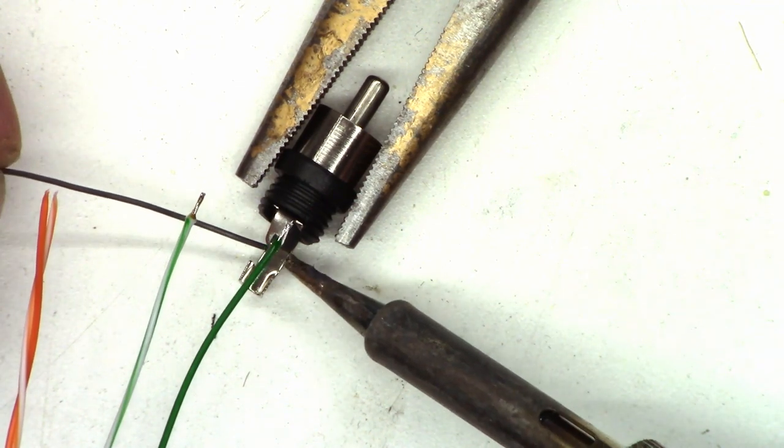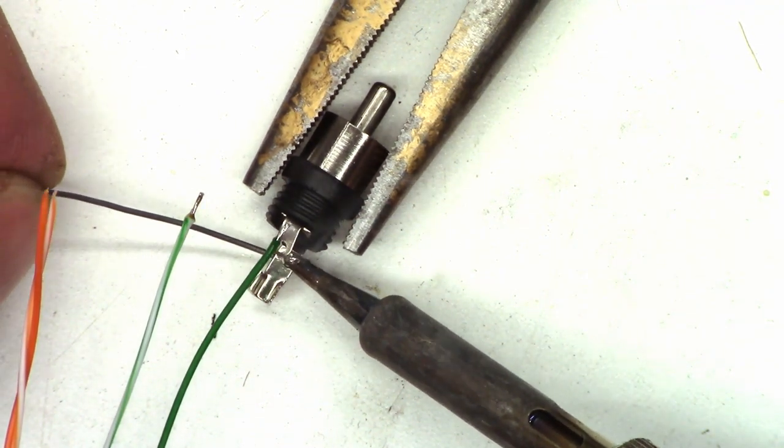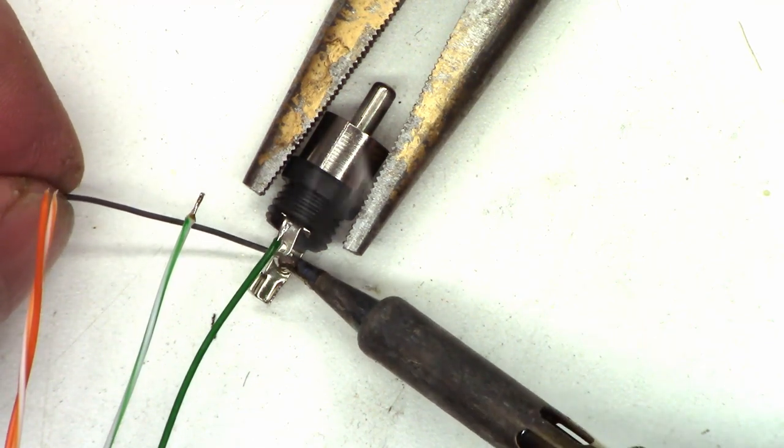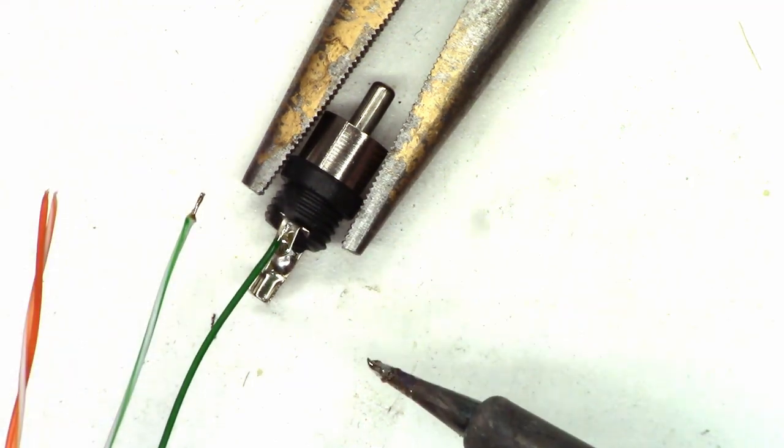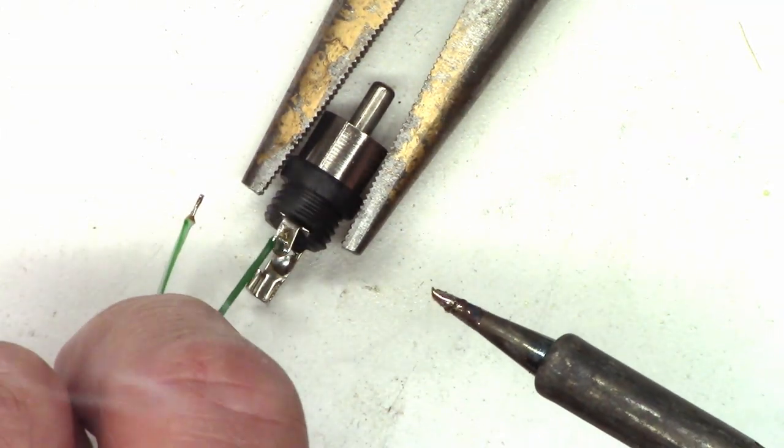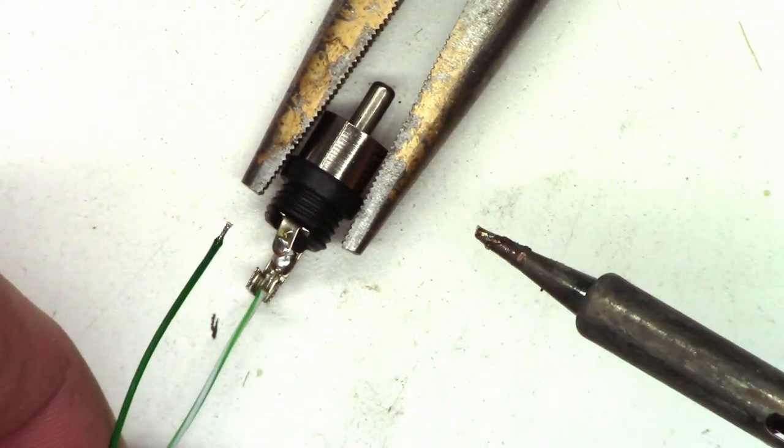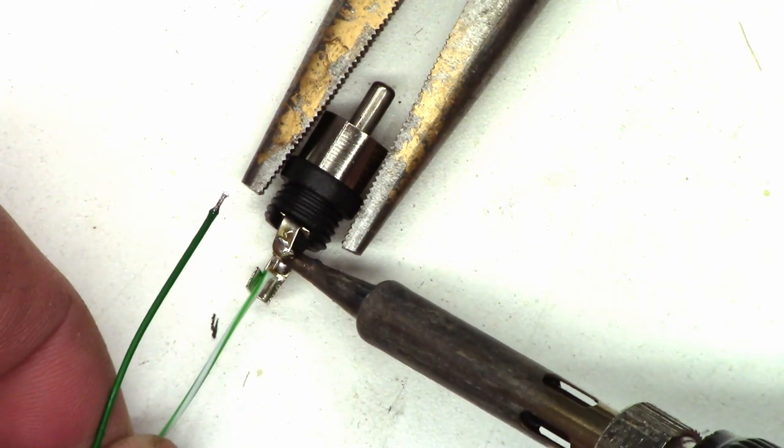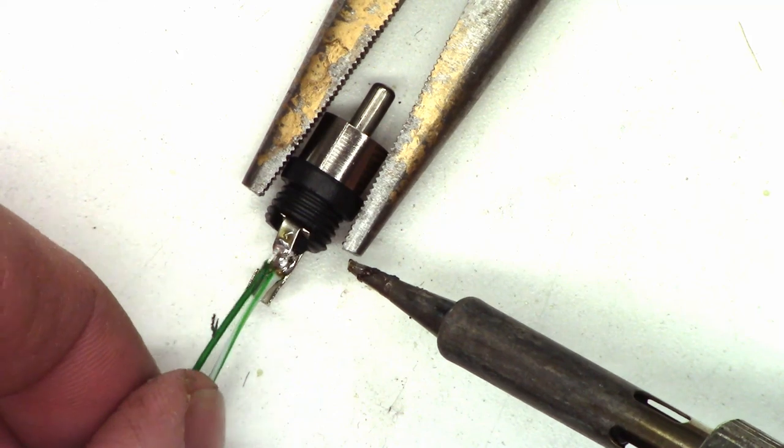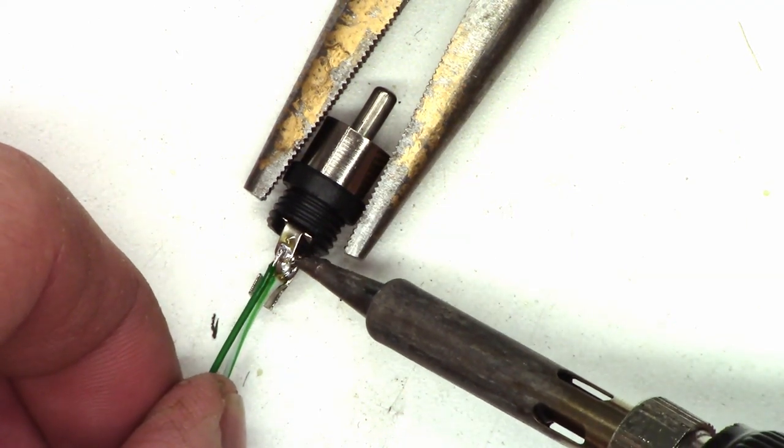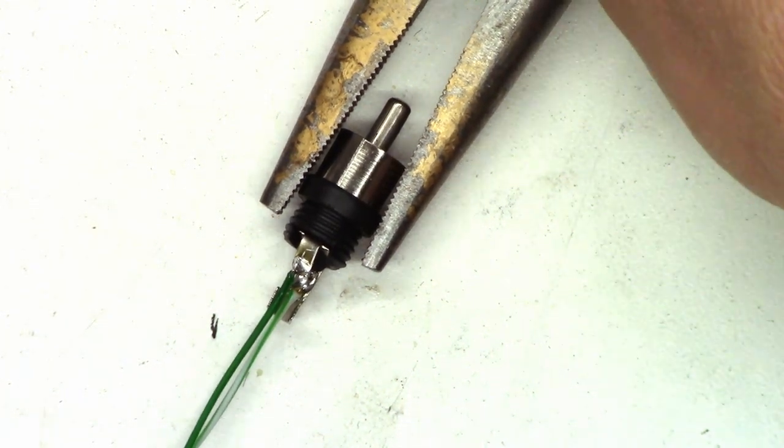And we'll trim off the excess. And then I want to pre-tin my jack. So I don't think flux will be necessary on this jack because they're much larger connections. So my green white is going to be the ground lead. And my green shall be the hot. All right. Left channel is done. Let's do the right channel now.